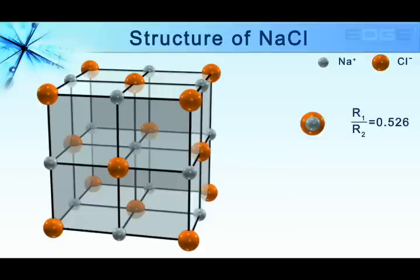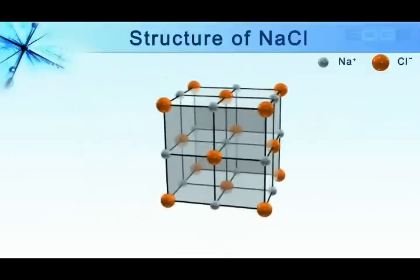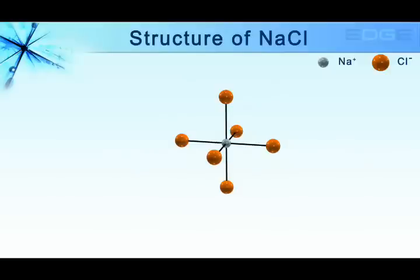The radius ratio suggests that the coordination number of each ion is 6. So, in NaCl structure, each Na+ ion is surrounded by 6 Cl- ions.